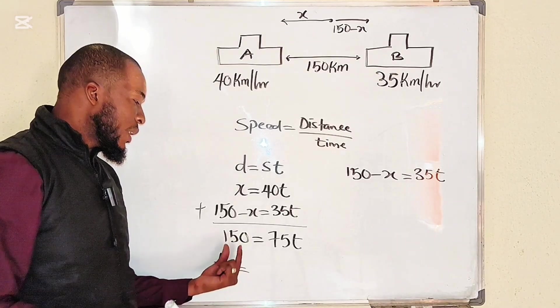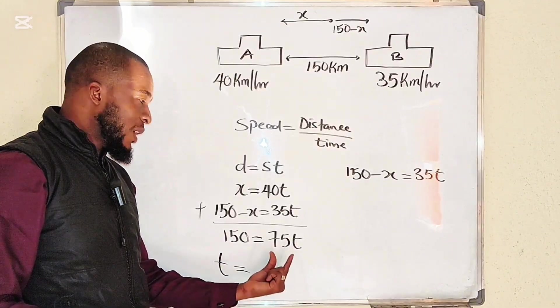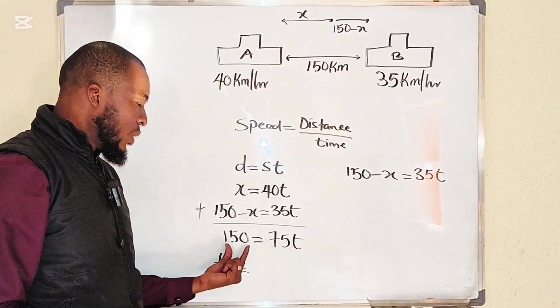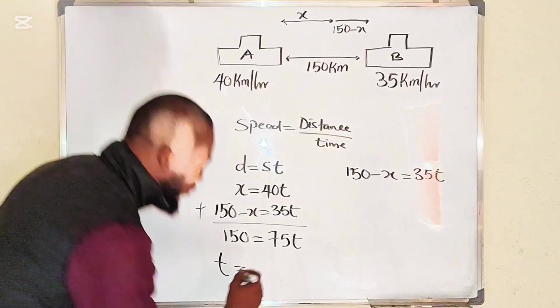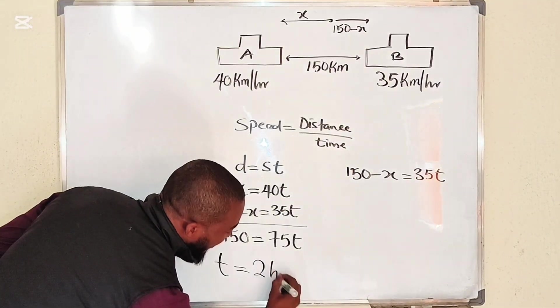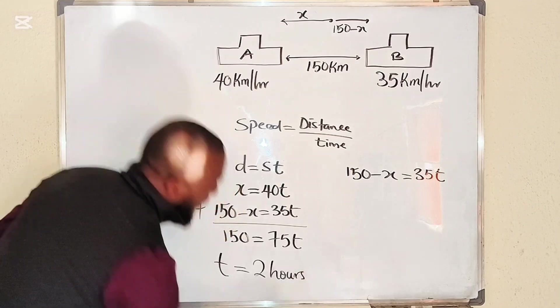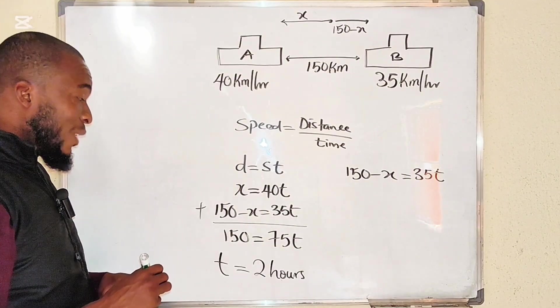So time t will be equal to, dividing both sides by 75, 150 divided by 75 will give us exactly 2 hours. So after two hours they are going to meet.